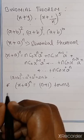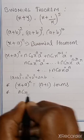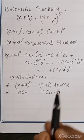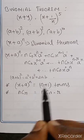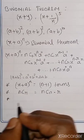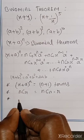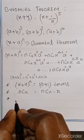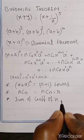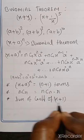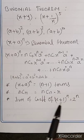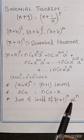We can write NCR equal to NC(N-R) — we use this to make calculations simpler. Next, the sum of coefficients in the expansion of 1 plus X power N equals 2 power N.